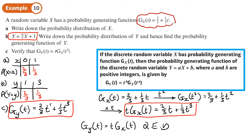In the general statement: if we have a discrete random variable X and Y = aX + b, then the PGF of Y is t^b times the PGF of X evaluated at t^a. So the 'a' that multiplies X becomes the power inside, and the 'b' that's added becomes the power of the outside t factor. We just proved that in the last example.